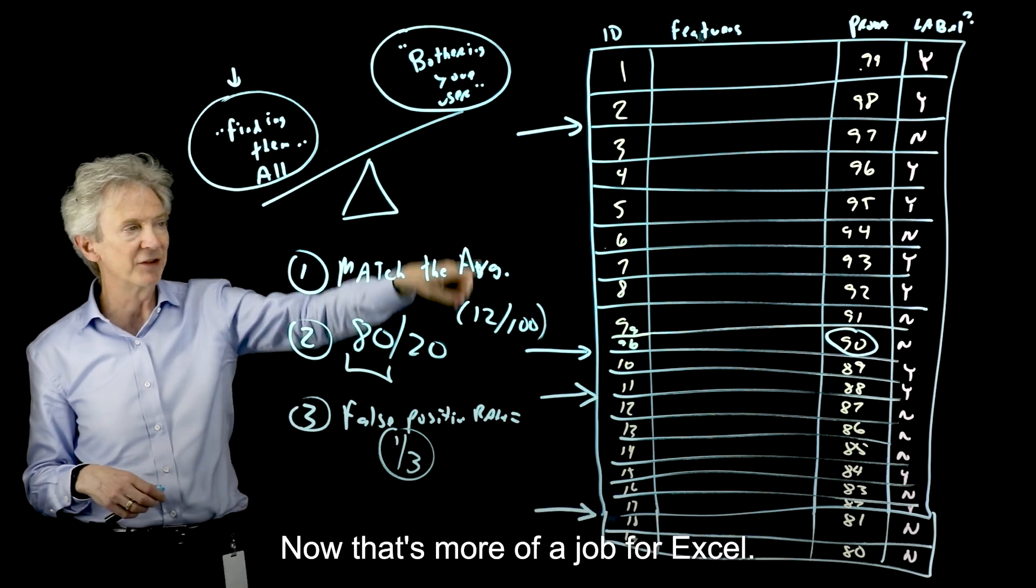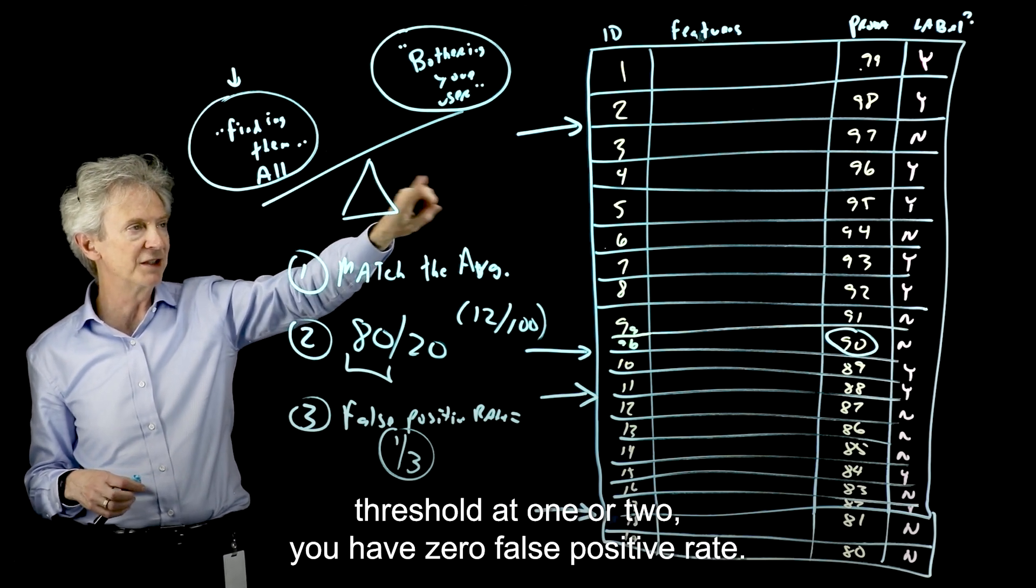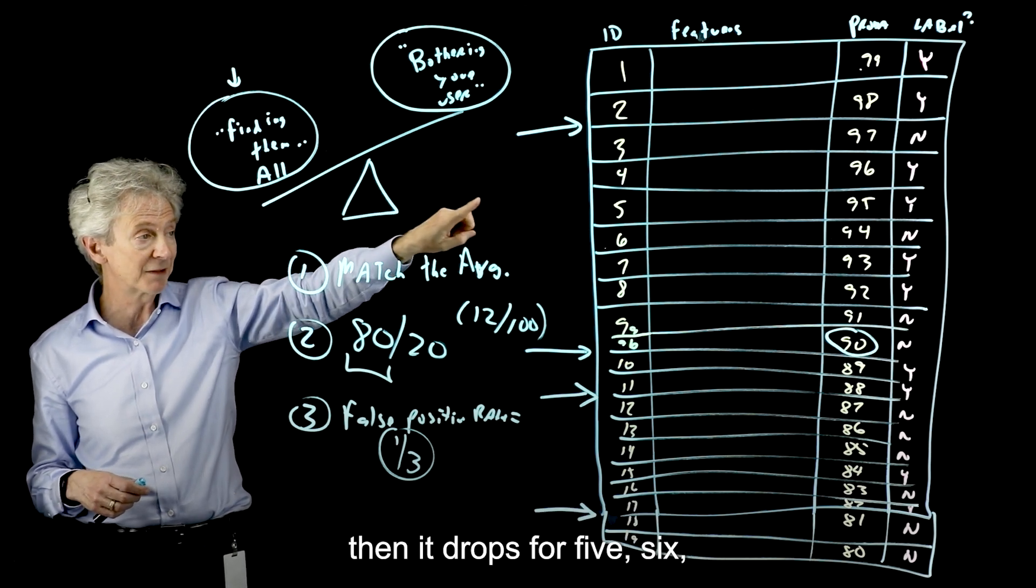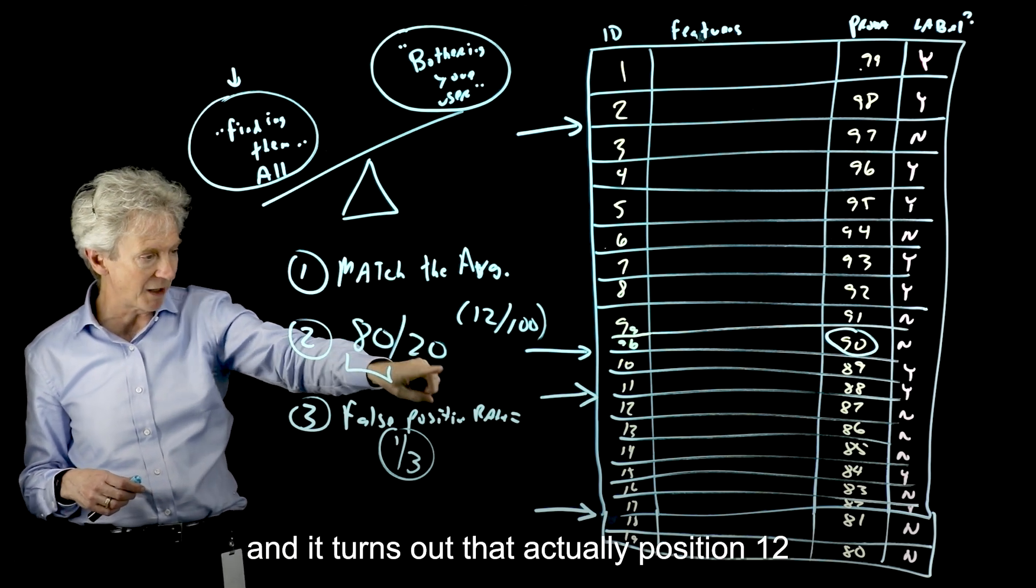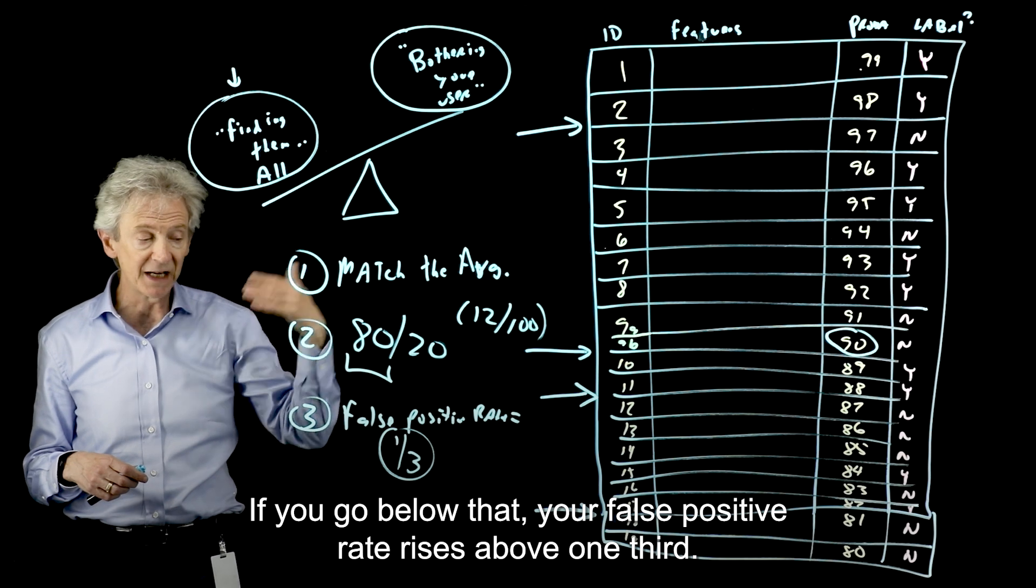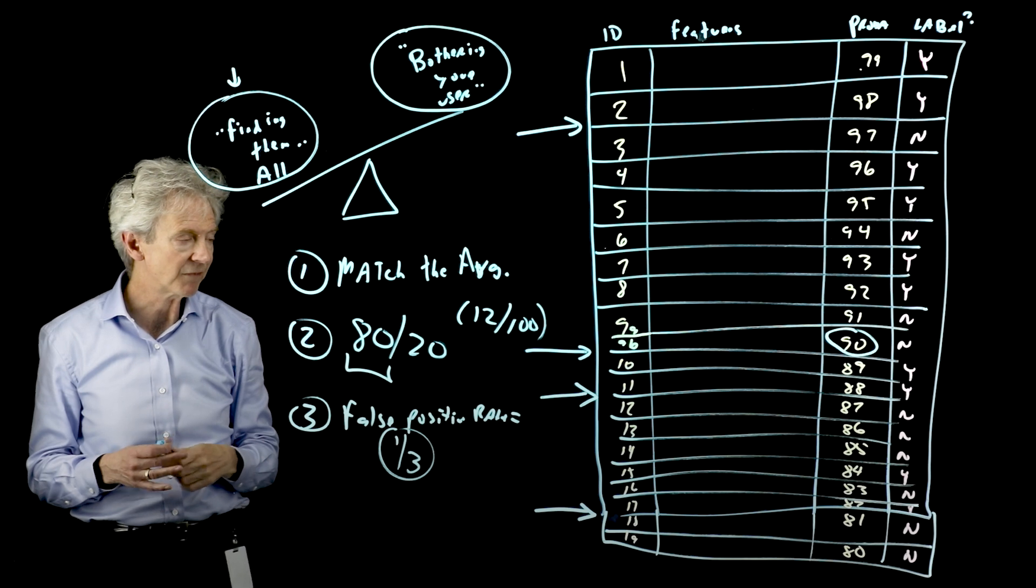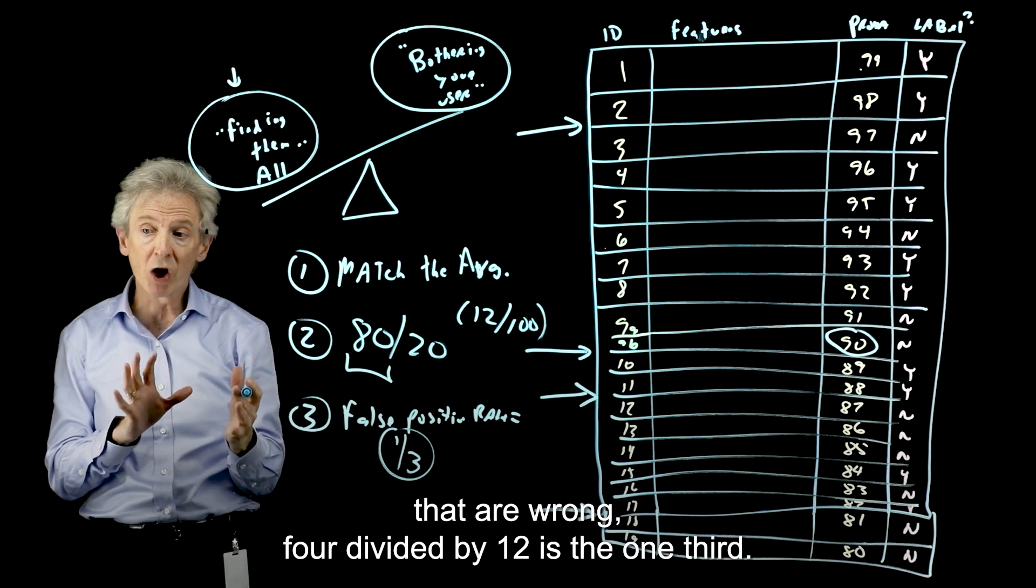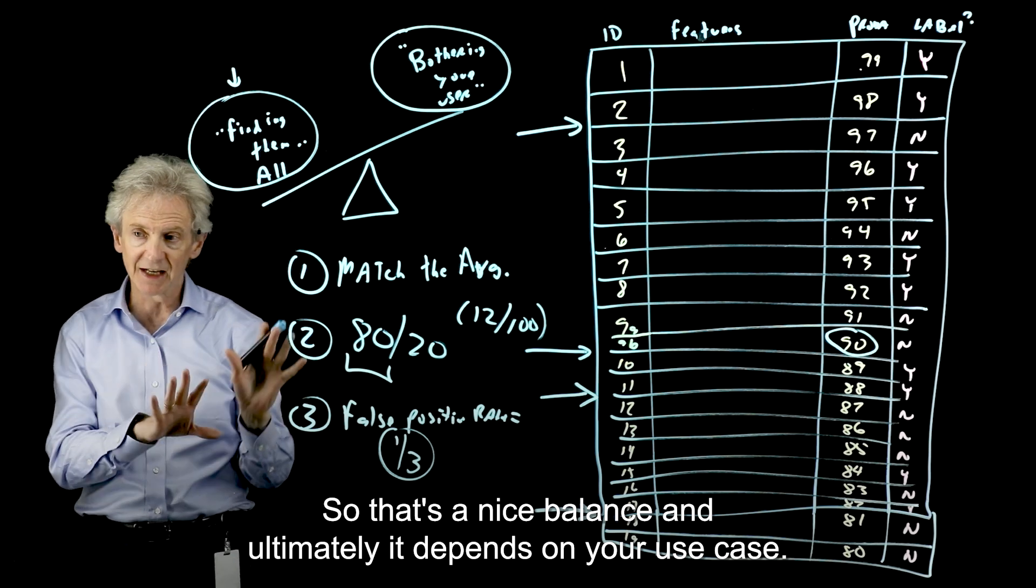And then the last thing I would suggest is a false positive rate equal to something you think you can stomach, your users could stomach. So I've seen one-third bandied about a lot, and I have also done that. So you could say, from our user's point of view, what amount of false positive seems like a good, reasonable balance? And you could start with a third and see what that looks like. Now, that's more of a job for Excel. But if you go down threshold at 1 or 2, you have a 0 false positive rate. By the time you get to 3, you do have a one-third rate. But then it drops 4, 5, 6. And it turns out that actually position 12 gives you the false positive rate of one-third. If you go below that, your false positive rate rises above one-third consistently. So 12, meaning we're finding 8, there's 4 that are wrong. 4 divided by 12 is the one-third. So that's a nice balance.